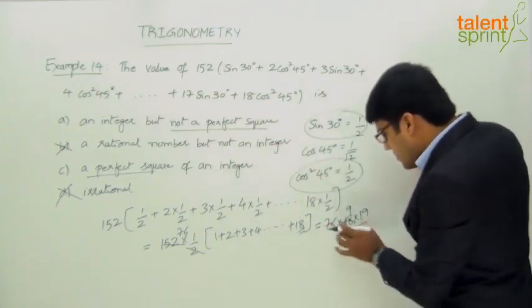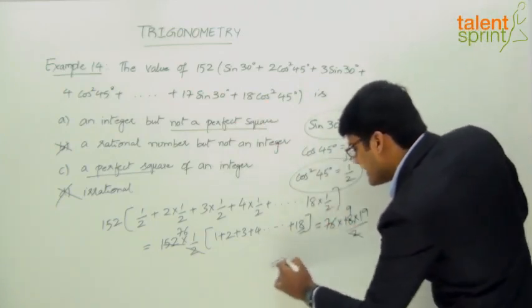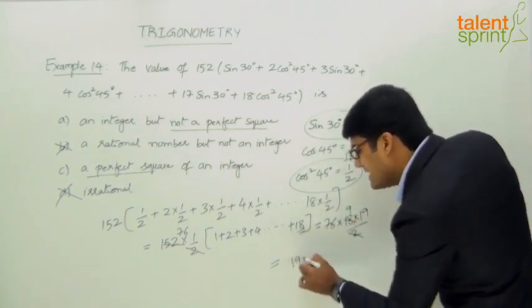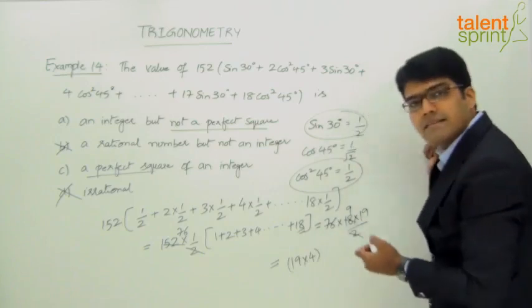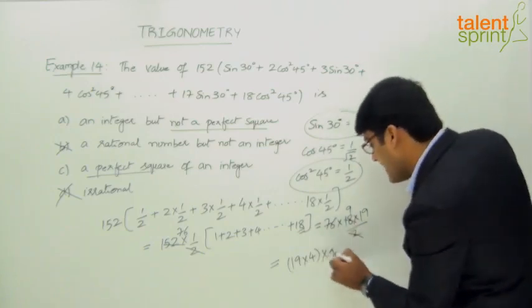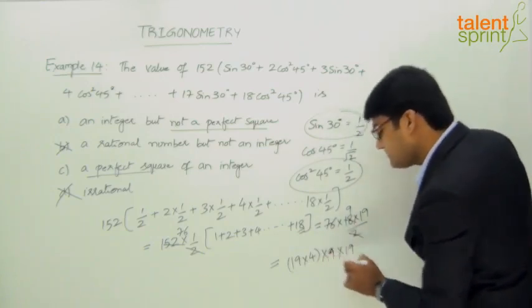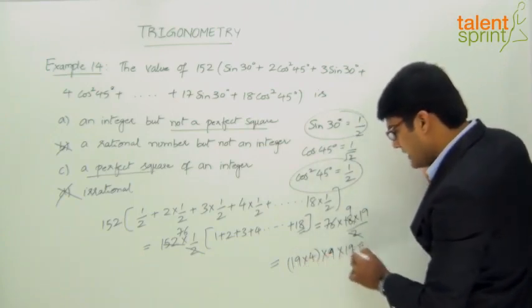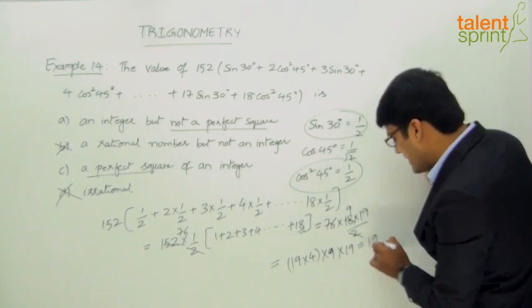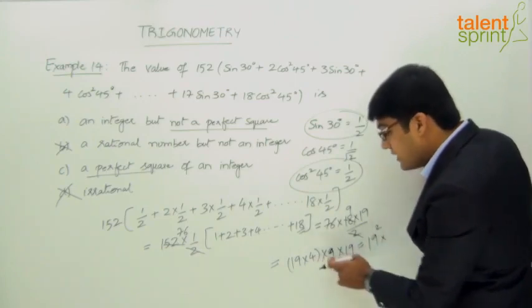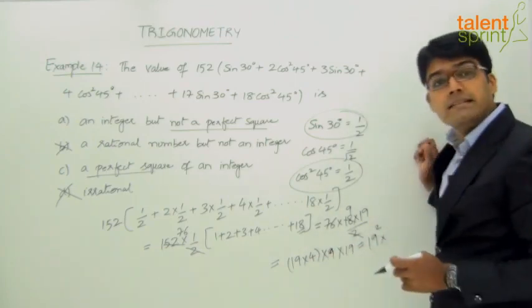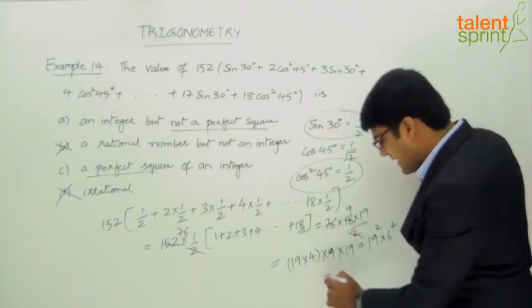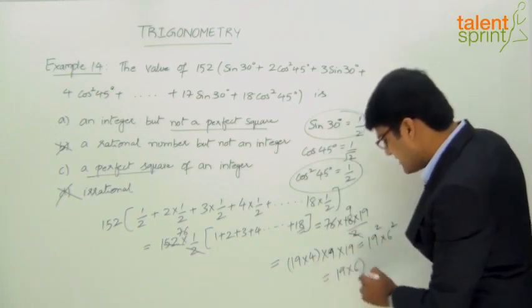Now if you try to look at this value here, it is 76 into 9 into 19. 76 can be taken as 19 into 4. 76 is 19 into 4, into 9 into 19. So what do we have? 19 into 4 into 9 into 19. Or it can be taken as 19 into 19 is 19 square into 4 into 9. What is 4 into 9? 36. 36 can be taken as 6 square. So if you observe, the final value is 19 into 6 square.